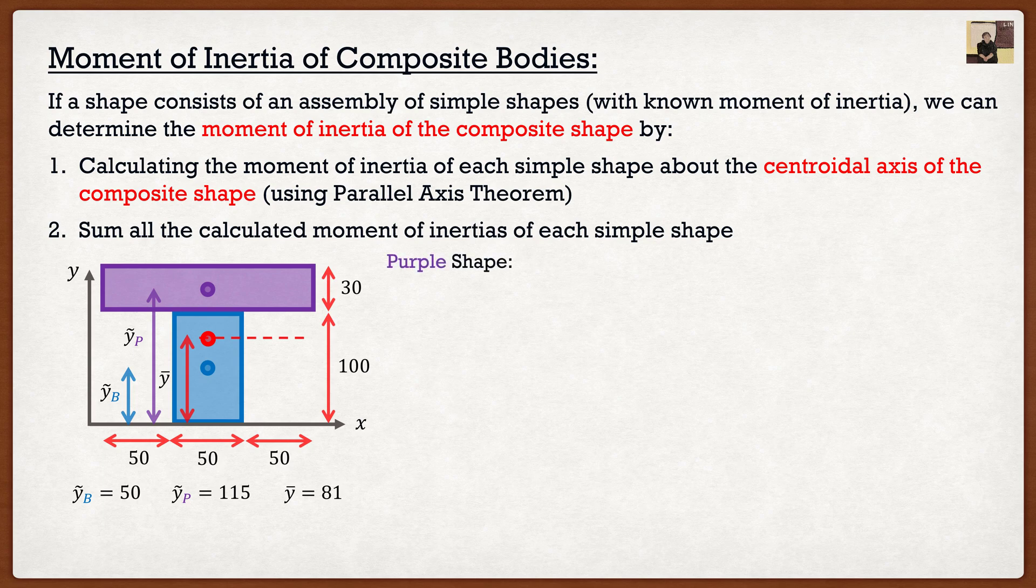If we were to look at our purple shape at the top, we know the moment of inertia for a rectangle is base times height cubed divided by 12. Now the problem with that is that will give us the moment of inertia about its own centroidal axis. That'll be the purple dashed line. So if I were to calculate the moment of inertia about the centroidal axis, base times height cubed divided by 12, I get a number, but again that's the moment of inertia around the purple line.